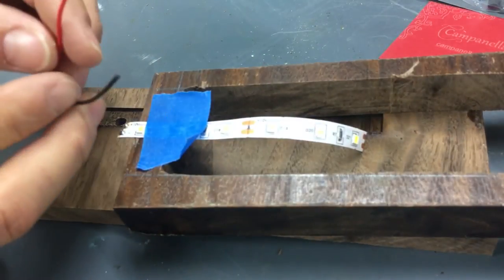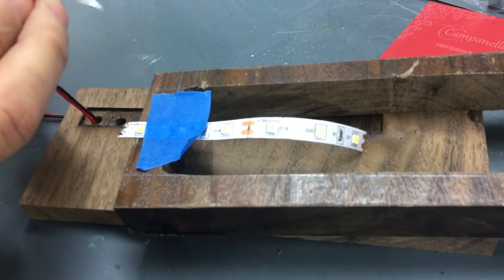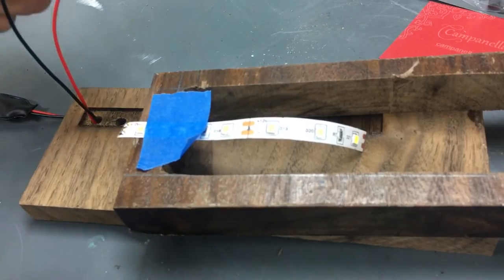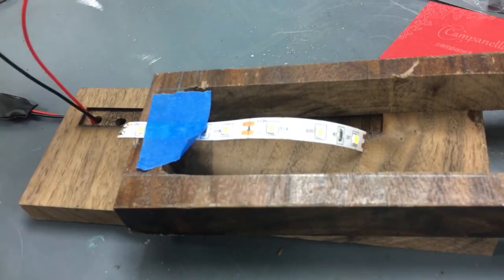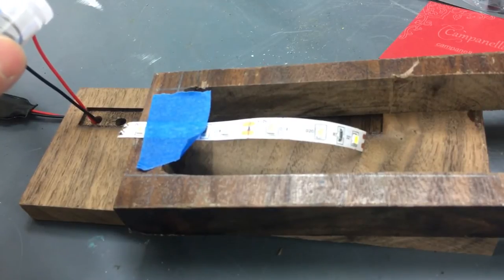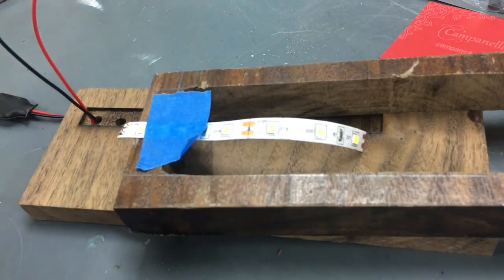And these wires were pre-tinned, so I don't have to add any solder to them, but I guess I could add a little just to make sure that they're ready to go. There's a positive and negative side to your LED base, or your LED strip.